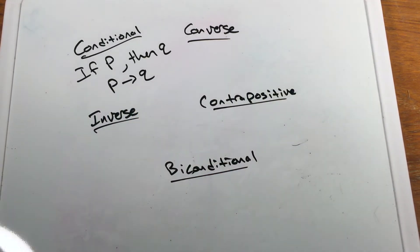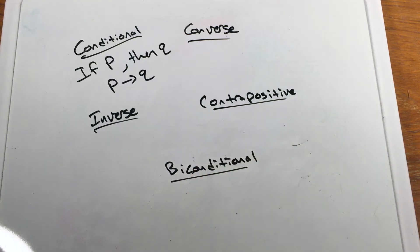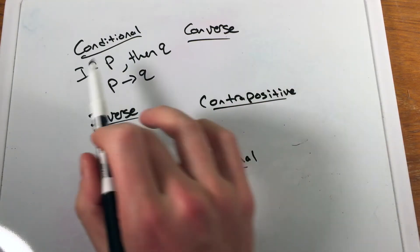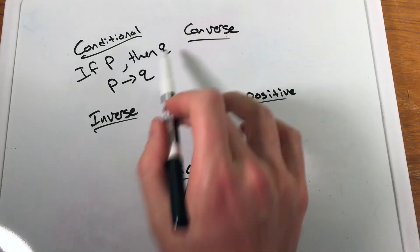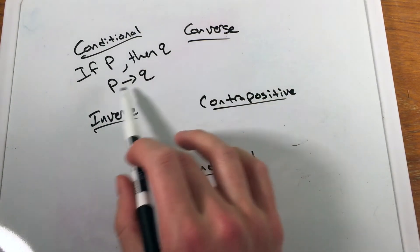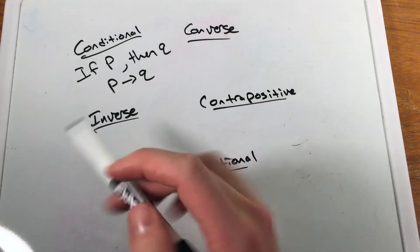I've got a little arrow there to represent it. That can be any statement — so whatever our statement is, if P, then Q, we can write it as such.